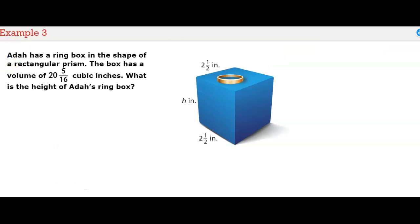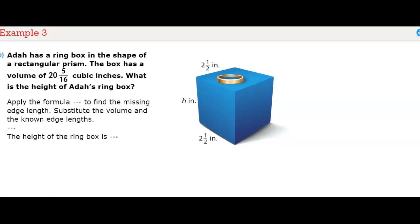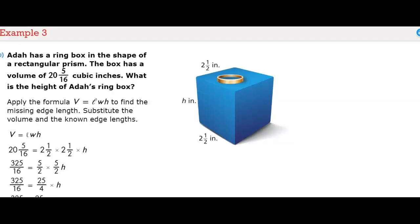Ada has a ring box in the shape of a rectangular prism. The box has a volume of 20 and 5/16 cubic inches. What is the height of Ada's ring box? We use the formula: Volume equals length times width times height. We don't know the height, so it's our unknown variable. We substitute the length, which is two and a half.